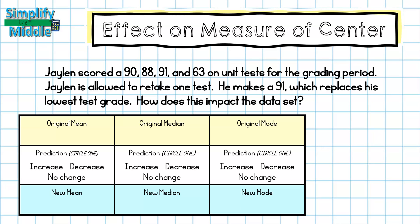First, let's read through our problem. Jalen scored a 90, 88, 91, and a 63 on unit tests for the grading period. Jalen is allowed to retake one test — he makes a 91, which replaces his lowest test grade. First, I'm going to pick out key information: I know his original test scores, and I know he can retake one test, so I'm going to be replacing that score.